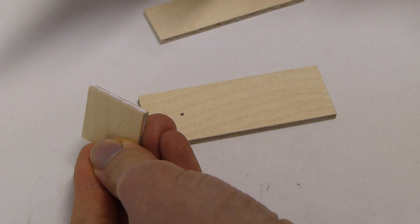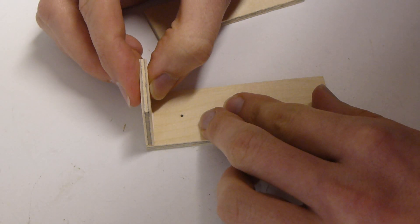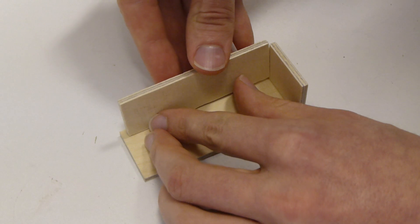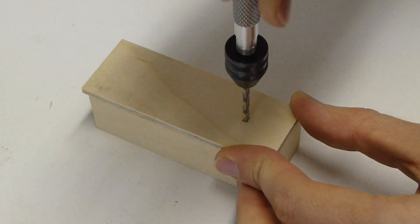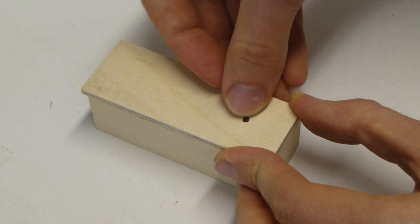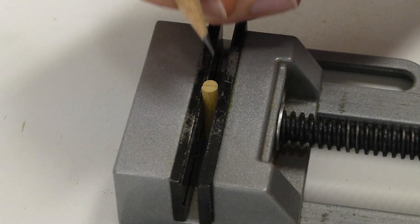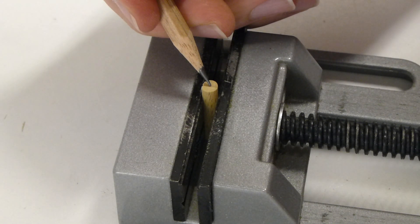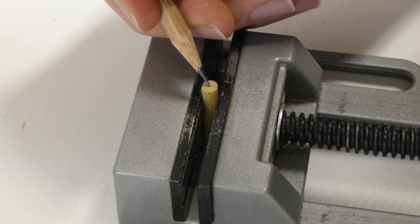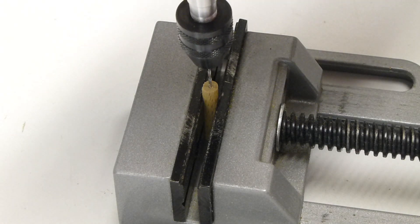Der Zusammenbau beginnt mit dem Verleimen des Gehäuses. Die Bohrung auf der Unterseite mit einem großen Bohrer etwas ansenken, damit der Schraubenkopf später nicht übersteht. Die Tellerwelle sollte auf der Unterseite vorgebohrt werden, damit das Holz nicht reißt. Die Bohrung muss sehr genau in der Mitte sitzen.